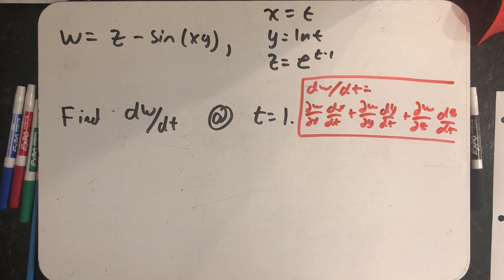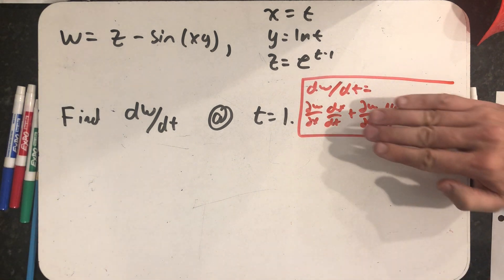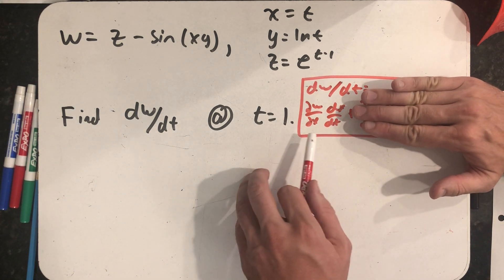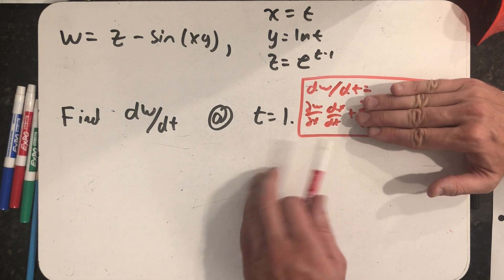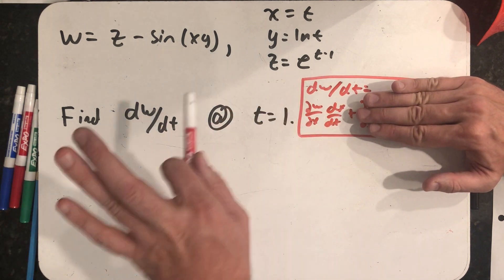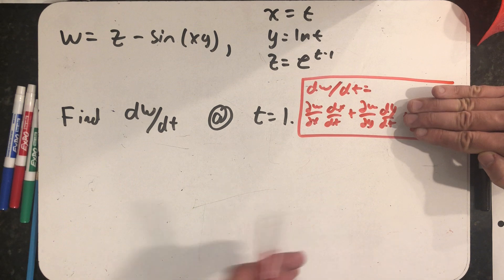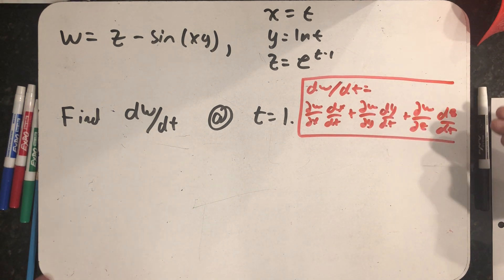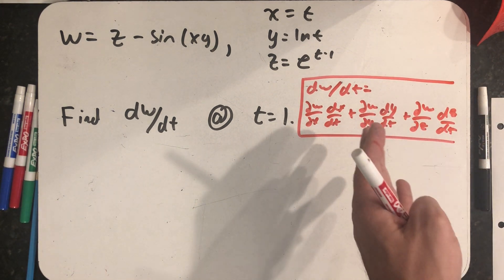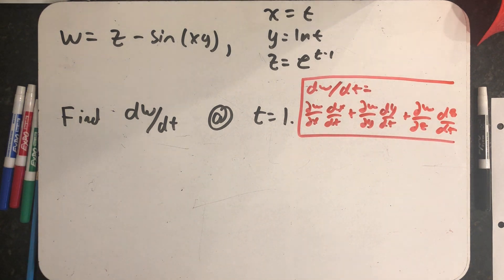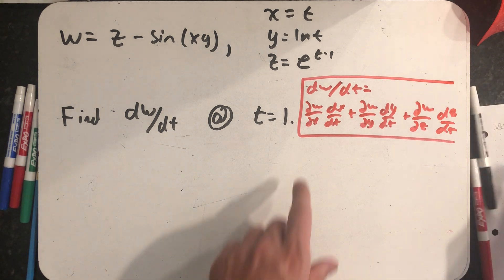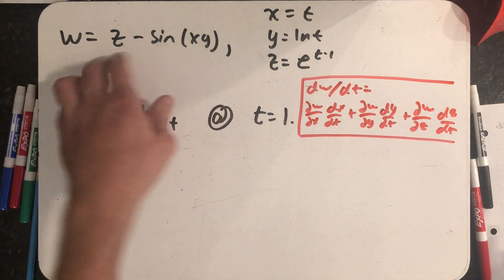And this is a good time to notice that if I cover up these things I really just have the chain rule for functions from calc 1 except these are partials and they should be derivatives. Cover up the last term and I have the chain rule for one independent variable and two intermediate variables, and then it's like I can now imagine how this generalizes by just keeping adding terms to it. So I need partials of w with respect to x, y, and z.